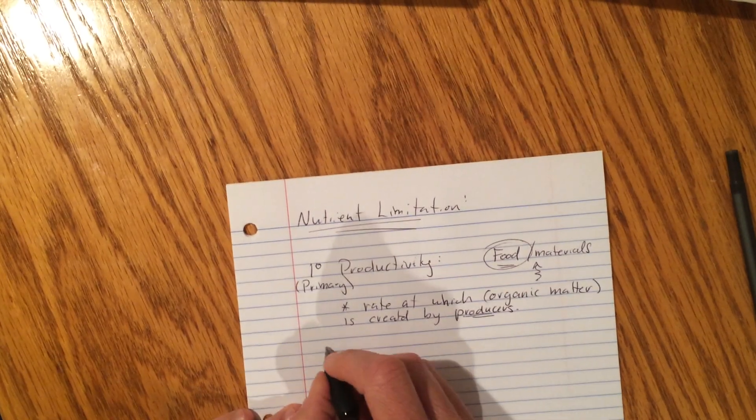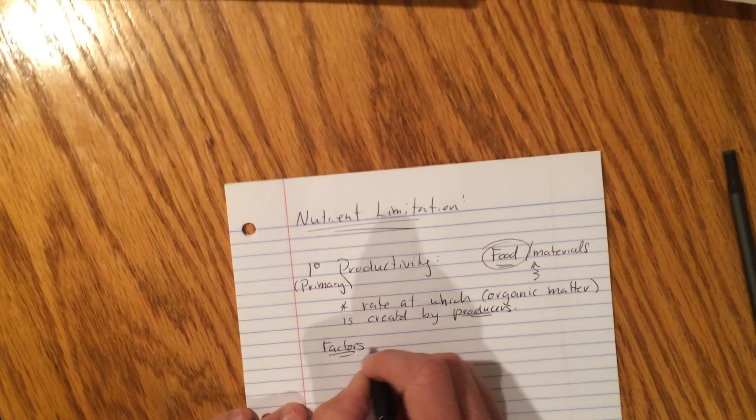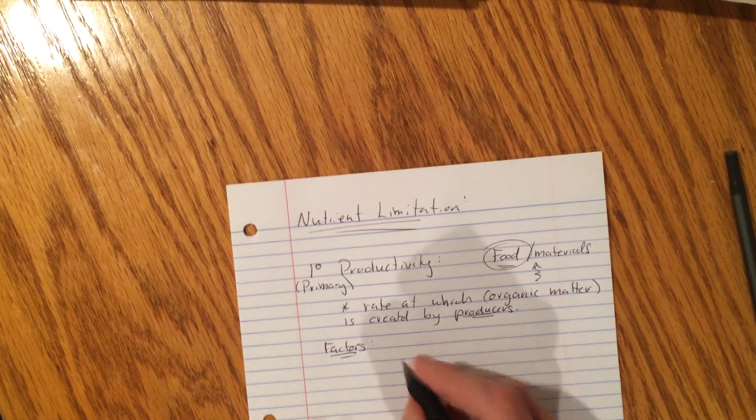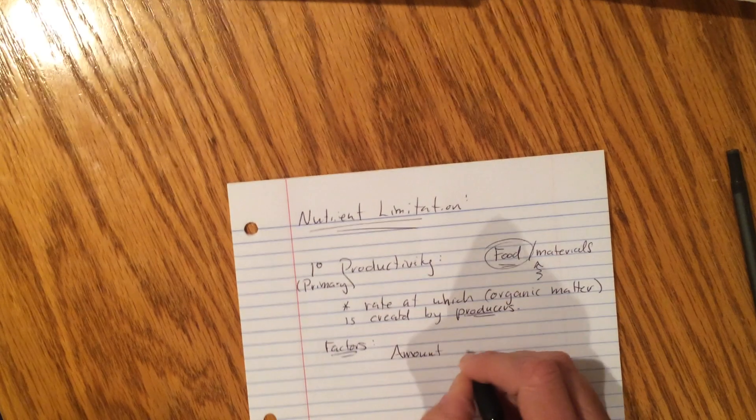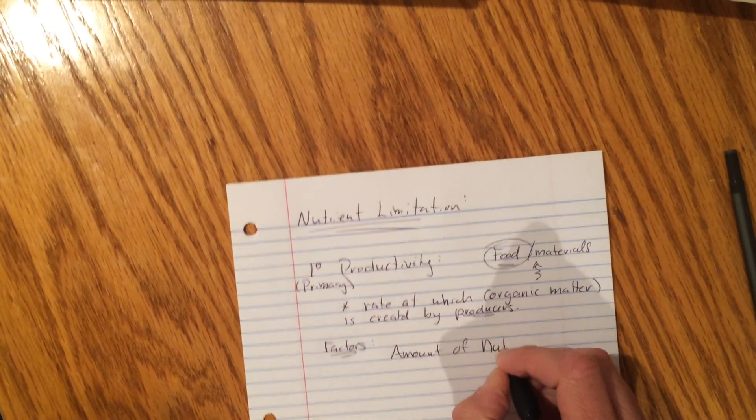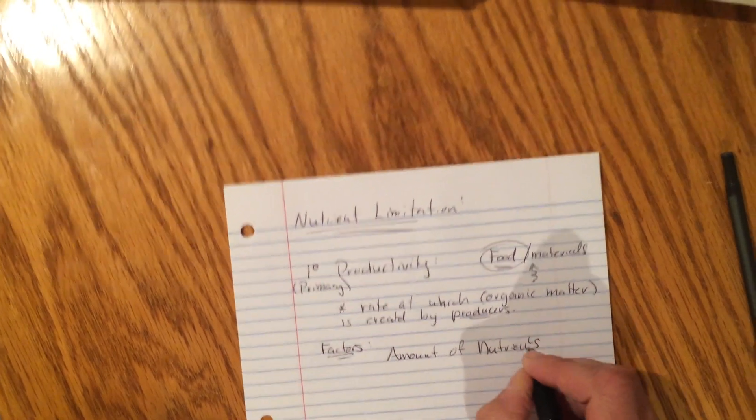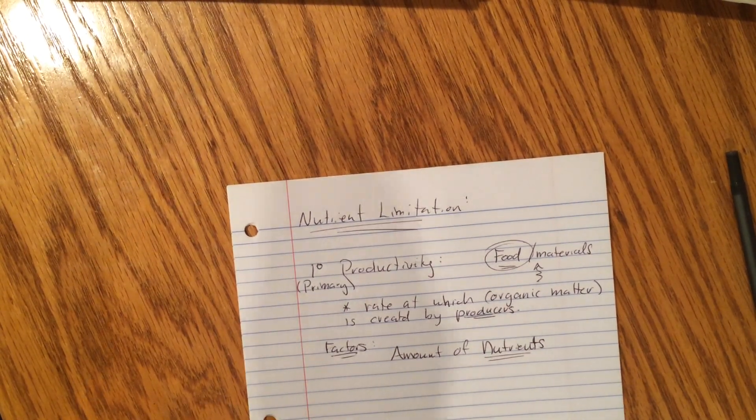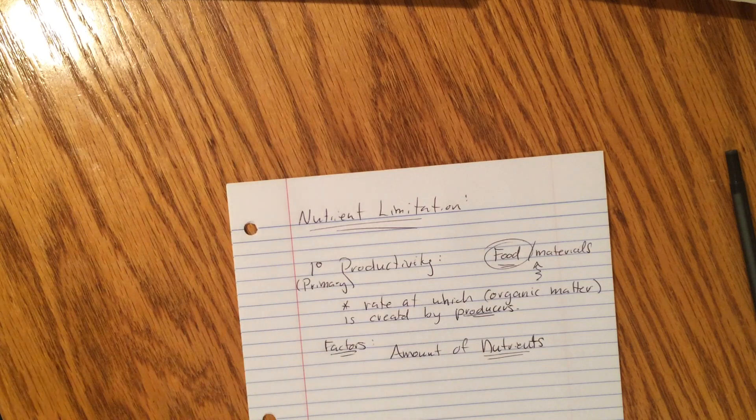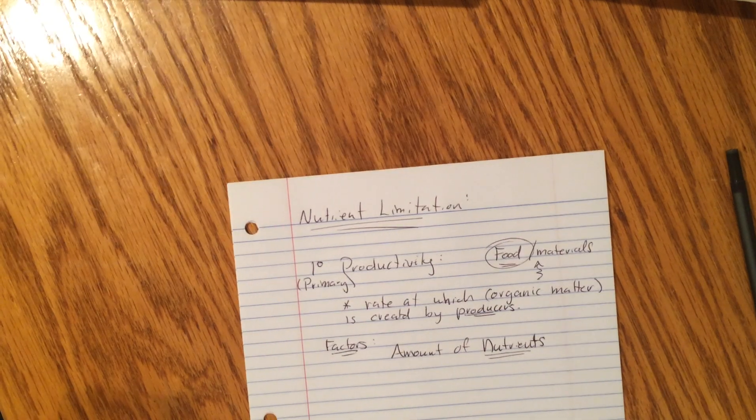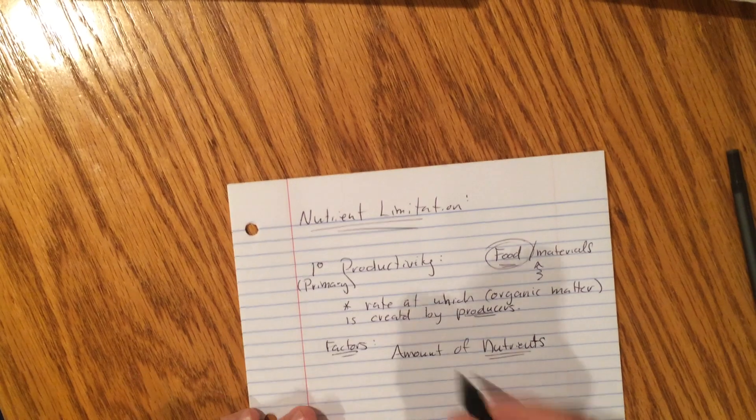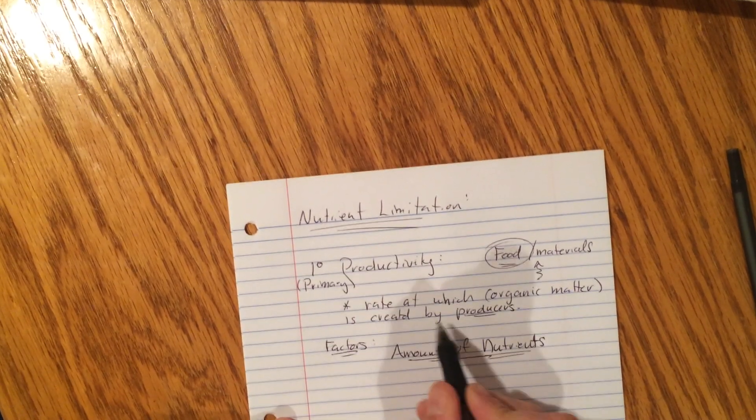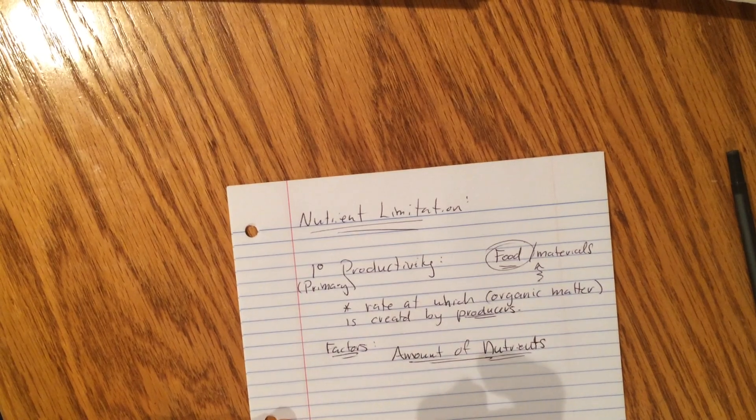Now, let's take a look at the factors. The factors would be anything that affects primary productivity. The number one factor is the amount of nutrients. If you remember from previous lessons, we were calling those the containers. So you've got water, carbon, nitrogen, phosphorus, etc. All of the things you need to build the biological molecules to survive. So the amount of nutrients actually affect how fast or how much producers can produce.